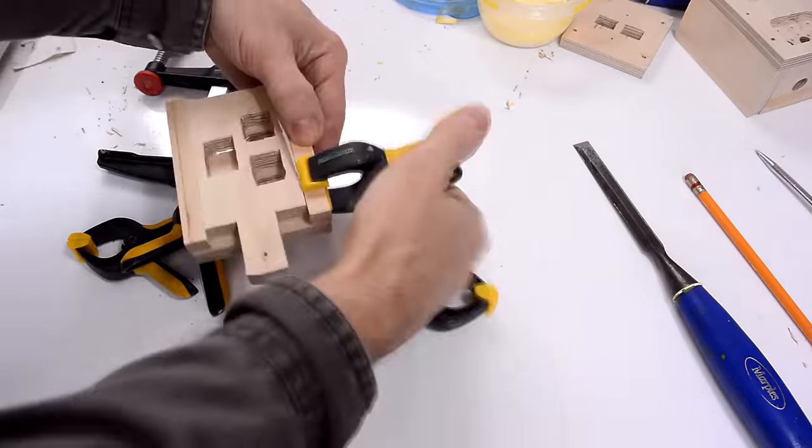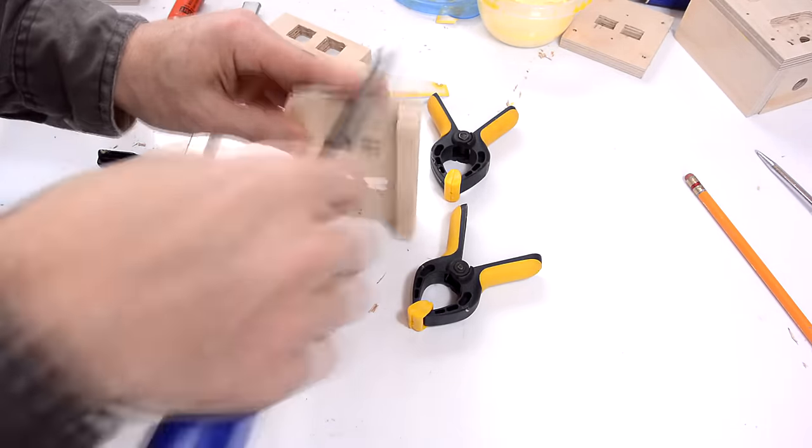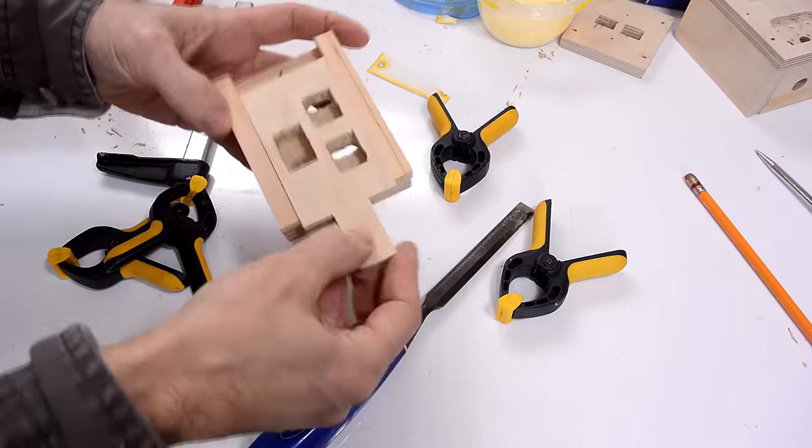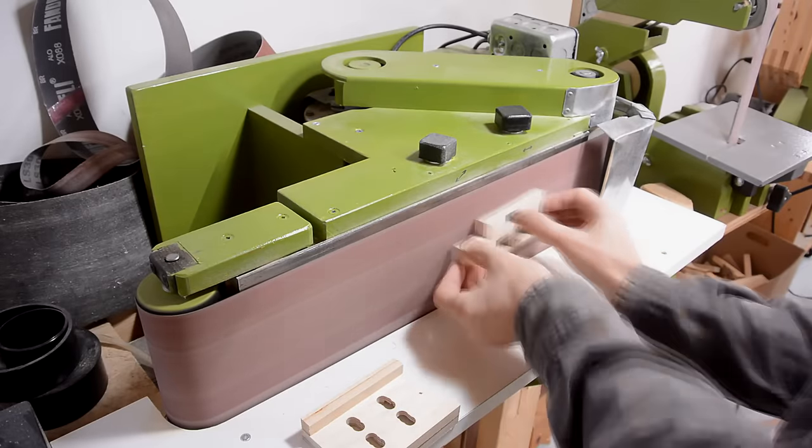I need to take this apart and clean up the glue squeeze out before it's fully dried. Still doesn't slide as easily as I'd hoped. I'll just use the belt sander to add some retroactive precision.